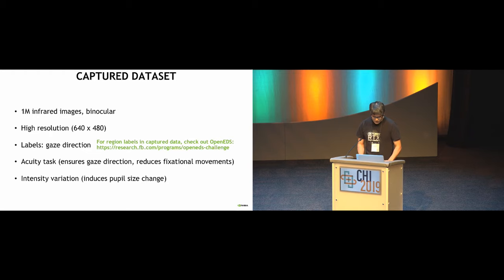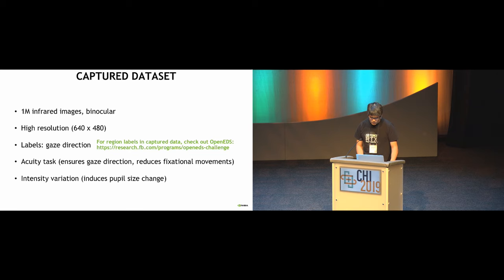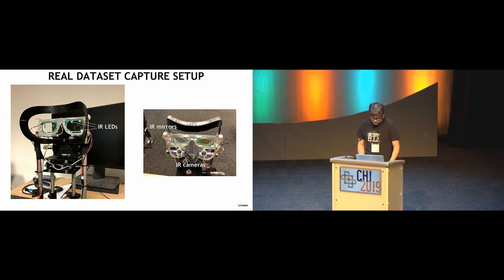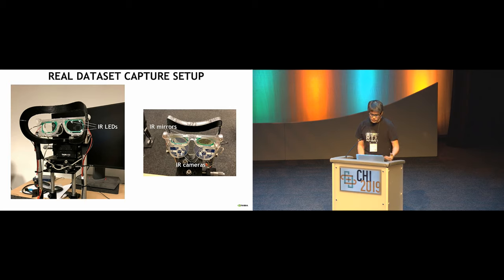One thing we wanted but couldn't provide in our dataset was pupil, iris, sclera, and skin region labels. Please check out OpenEDS for more information about region labeling in real data. For the capture setup, you can see part of the glasses frame prototype. We placed infrared LEDs where they are normally placed for near-eye gaze estimation. On the right, you can see the infrared camera looking up, and there are two circular infrared mirror plates. For the infrared camera, it's looking at our eyes straight on, while the viewer looks at the screen directly.